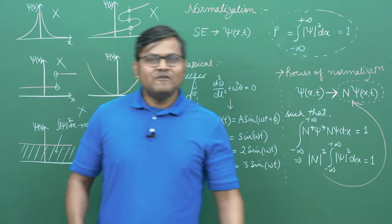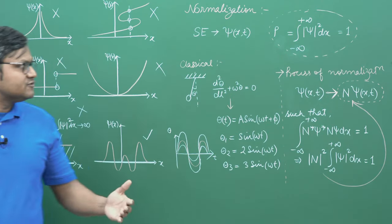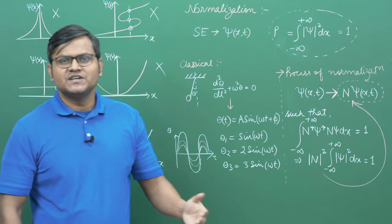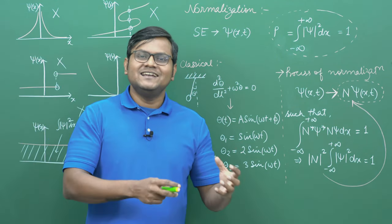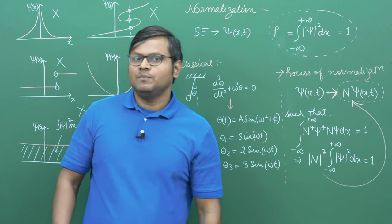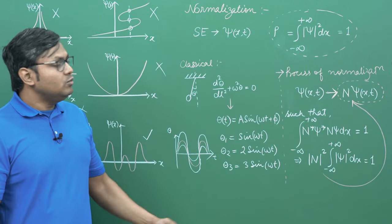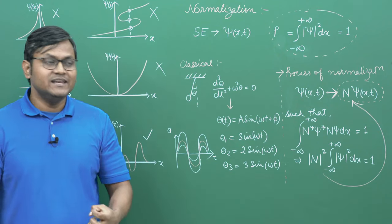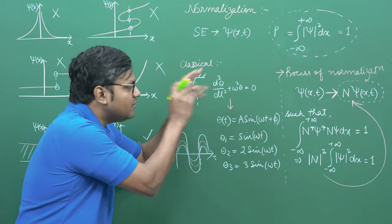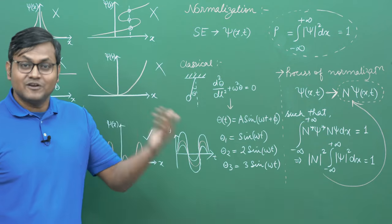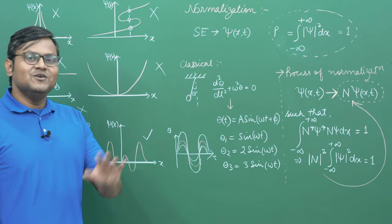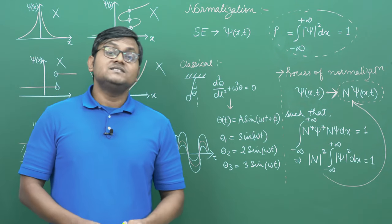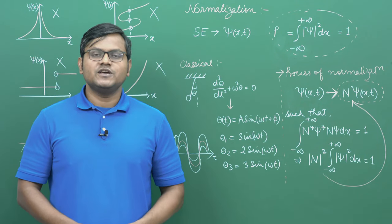This is the process of normalization — a very simple step to ensure the final function can represent a physical particle, for which the total probability condition is a must. Wave functions are not just any mathematical solutions of the Schrödinger's equation — we must impose many conditions before using them for actual physical particles. In the next video we will see what other information the wave function contains and what other mathematical operations we can perform to extract it.